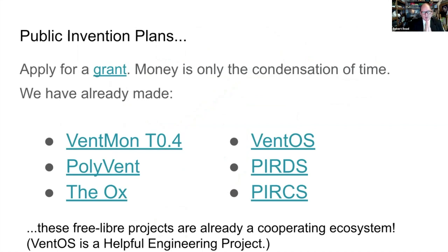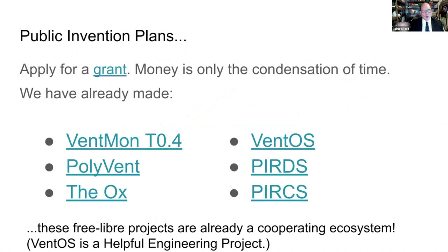At the end of this conference, I'm going to ask for money — not just for Public Invention, but also for Helpful Engineering, M19, Respiraworks, and all of the projects not associated with us. We are going to apply for a grant for Free Spirico. We want Free Spirico to become like the Apache project. Money really just makes things easier and makes you go faster. We have already made very important parts of Free Spirico, and we're going to continue working on those things — nothing can stop us.